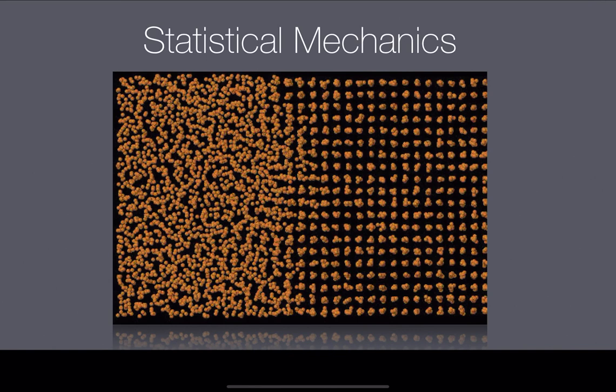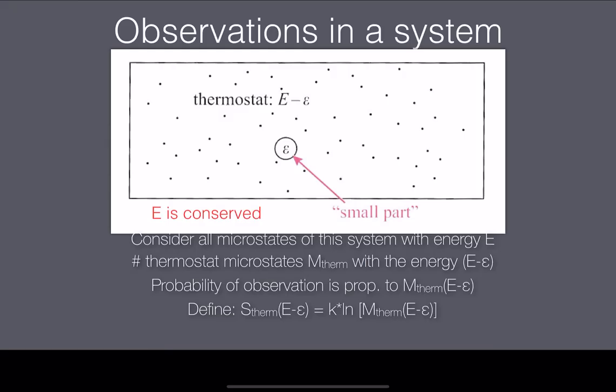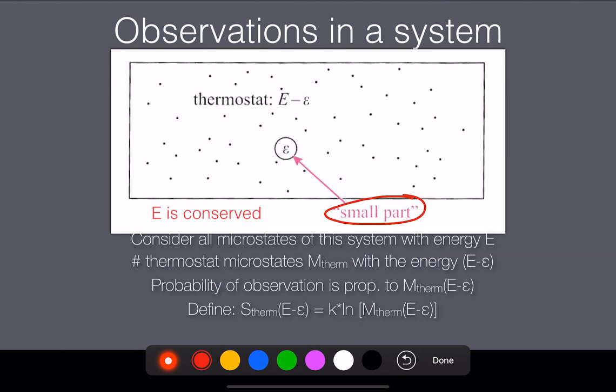The thing that might be slightly confusing is that we can't really assume anything about the system, so the part that is possibly the hardest is this slide where we're going to need to use some sort of general observations. Observation is the key word here because I'm interested in my small part of the system. This could be a protein in a test tube, it could be a small lab setup at Alvanova, or it could be a brick in the classroom, anything really.